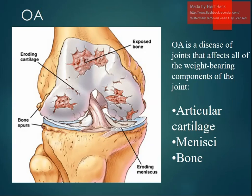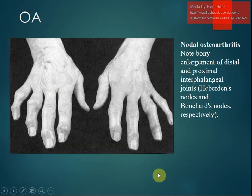Here you can see the exposed bone, eroding cartilage, forming bone spurs, and eroding meniscus. Osteoarthritis is also seen in the proximal interphalangeal joints, forming what are known as Heberden's nodes and Bouchard's nodes respectively.